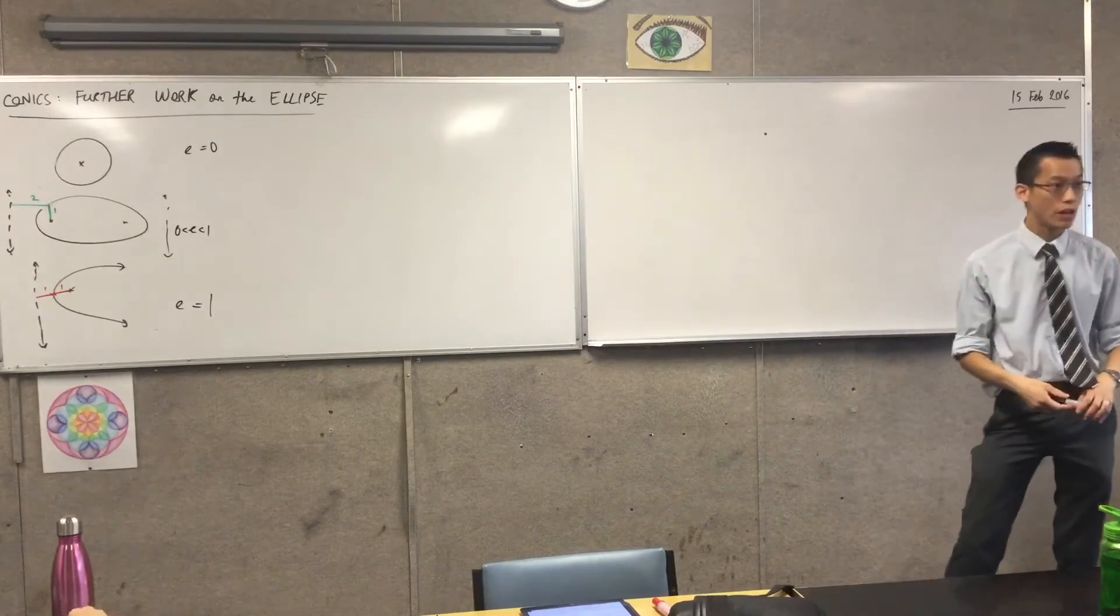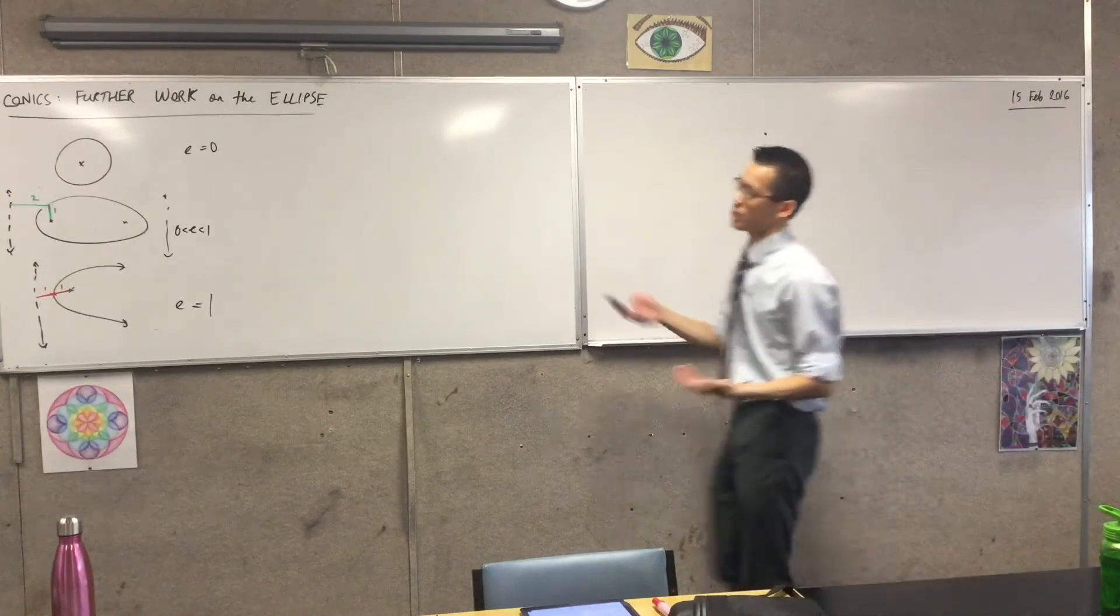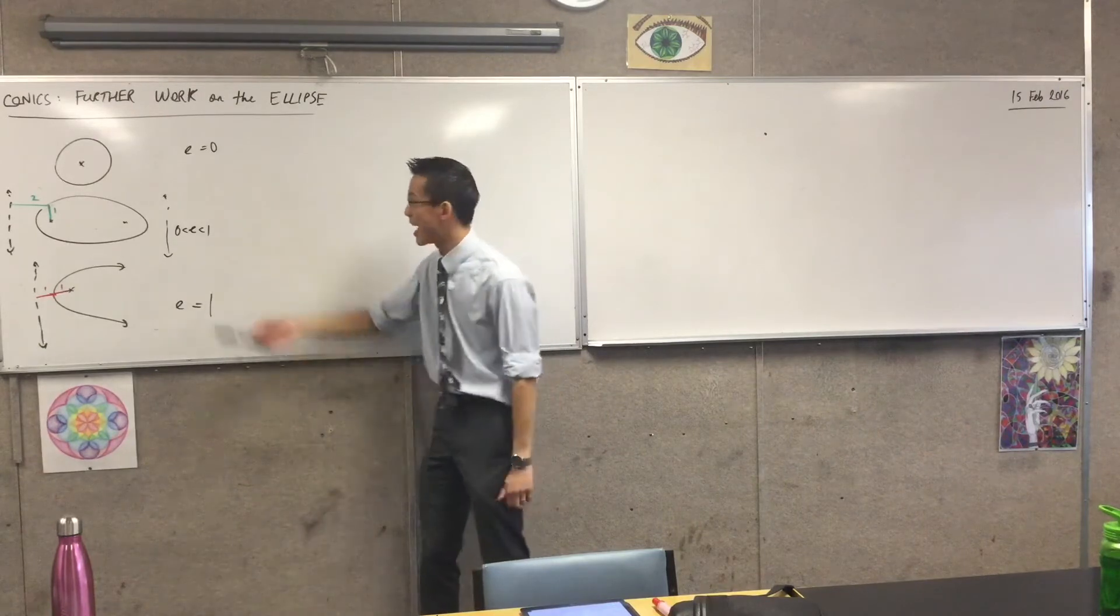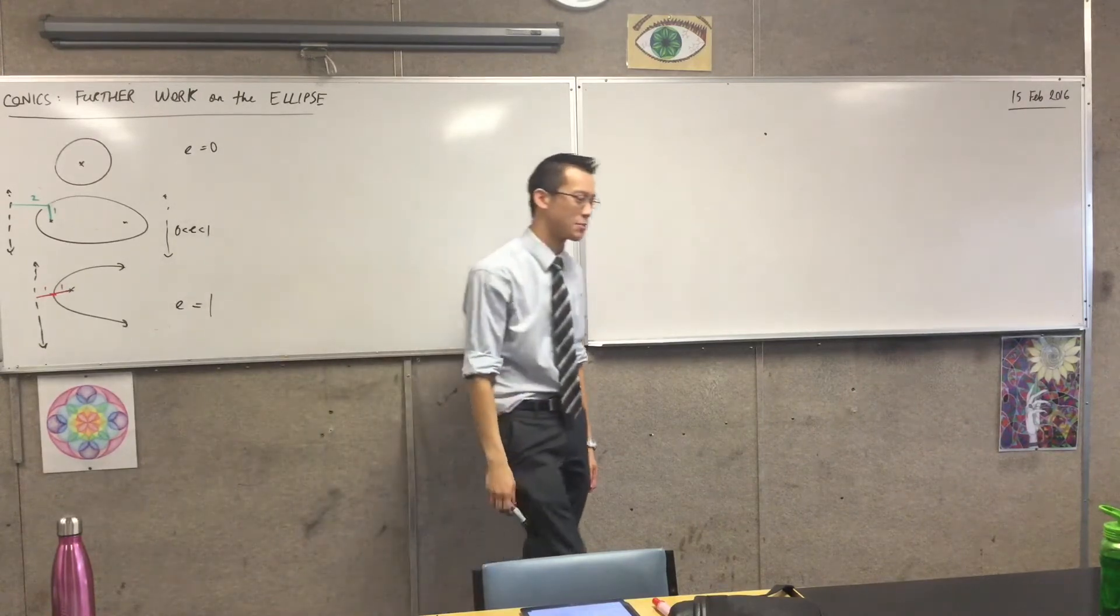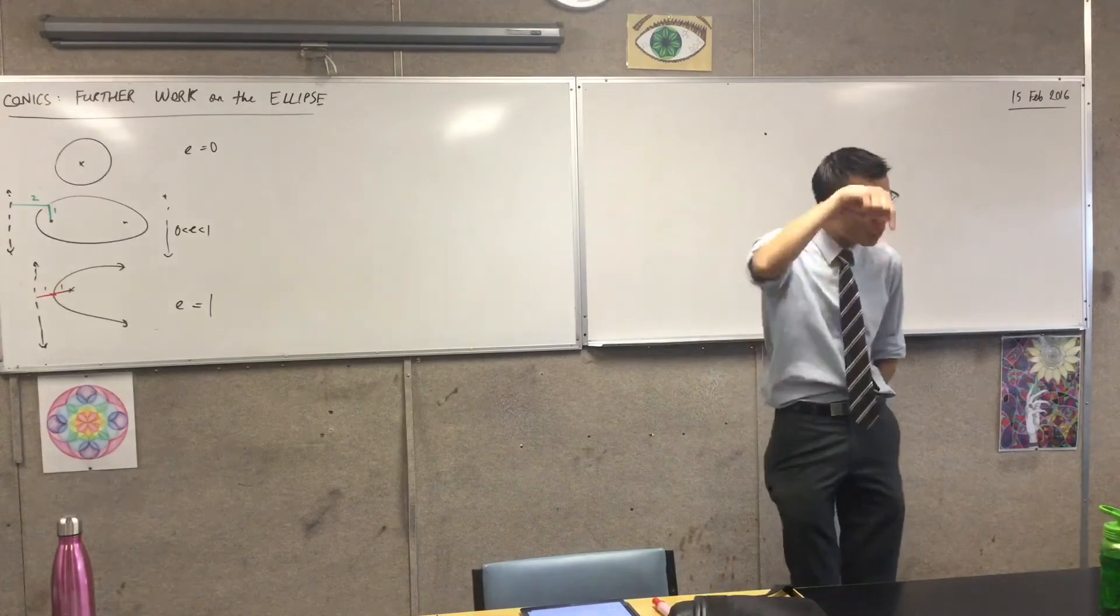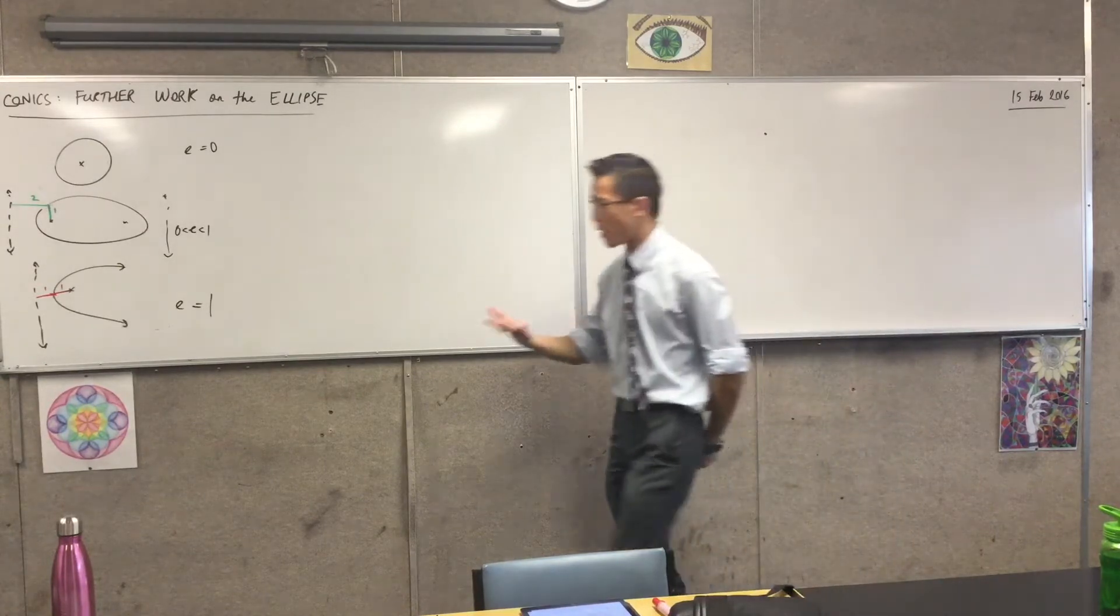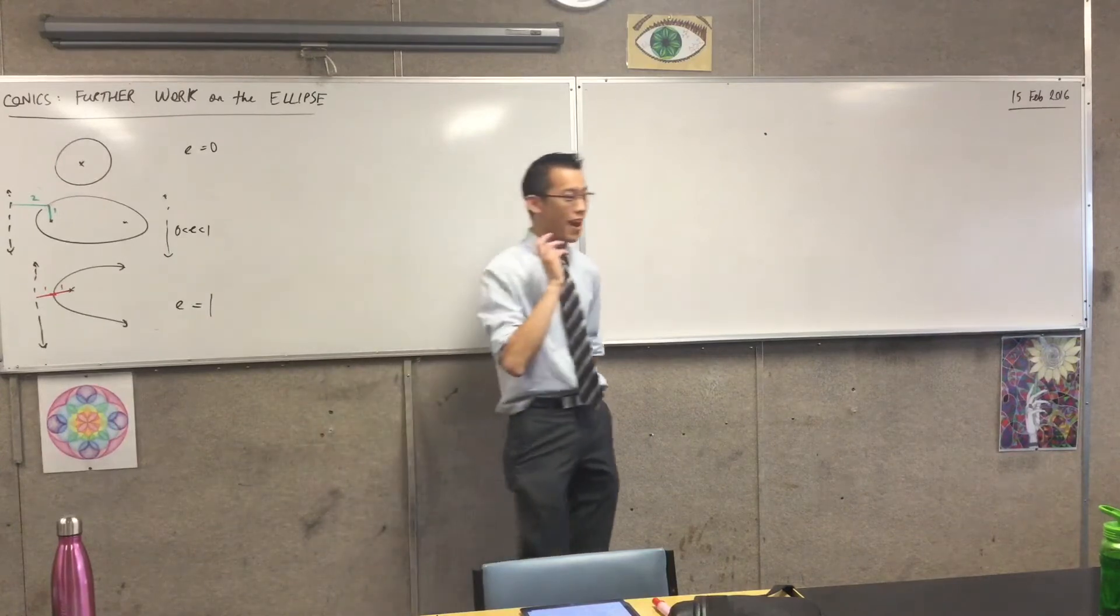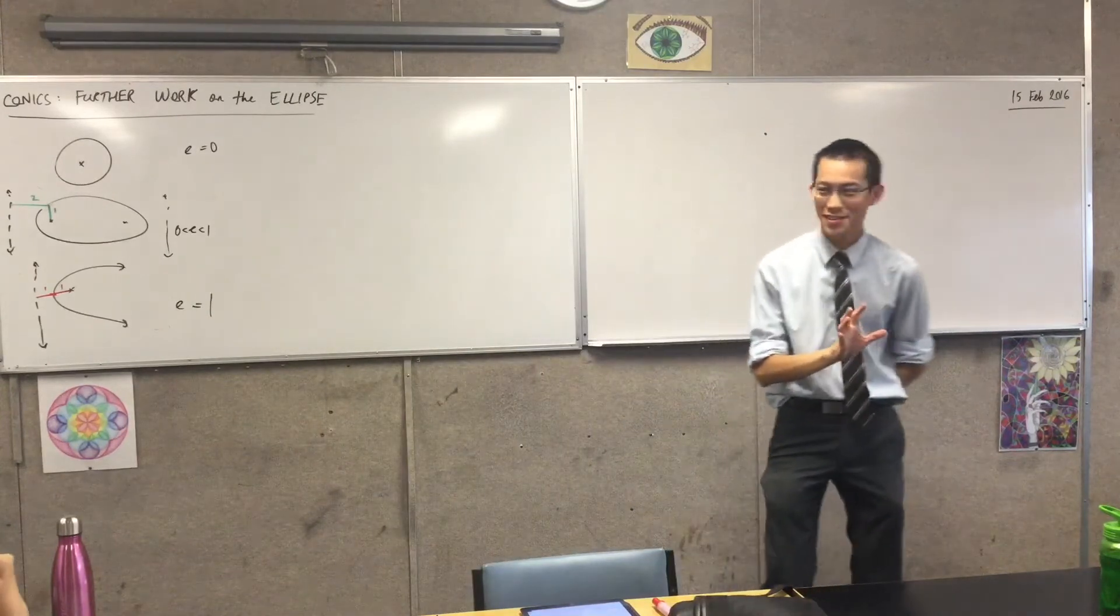Now, the question we ended with was, well, what happens - you can't really have a negative ratio, that kind of doesn't make sense. It makes as little sense as an eccentricity of zero makes sense. What happens, therefore, if you go in the other direction and you break out past an eccentricity greater than one? Now, we will ask and answer that question, I promise, okay?